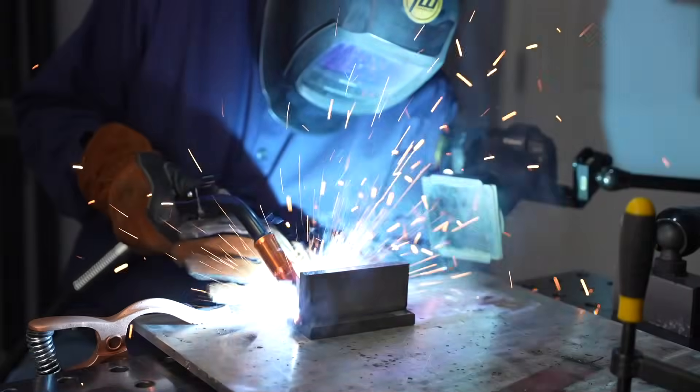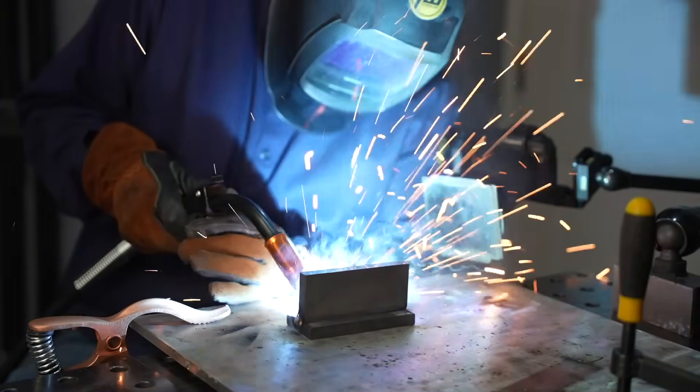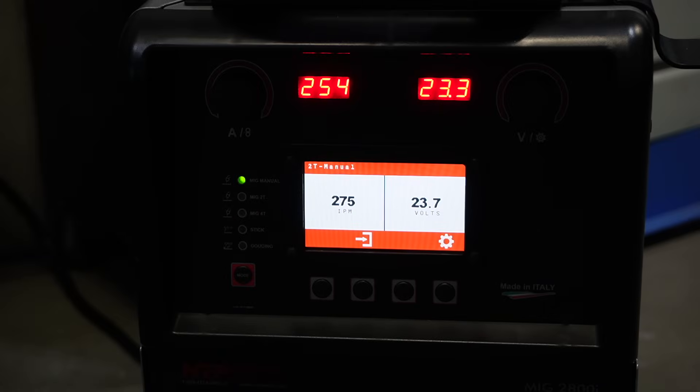Now we're ready to go. As I'm moving along here, notice I'm going about 45 degrees into the joint and a slight push angle. I'm using a very slight circular motion but never leaving the puddle. If you look at the front of the machine, that top left number is amperage—we're right around 250 amps and right around 24 volts, and that seems to be running pretty good though I could stand to have slightly less voltage.